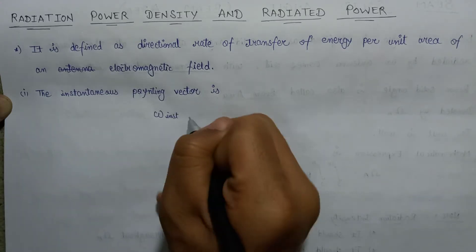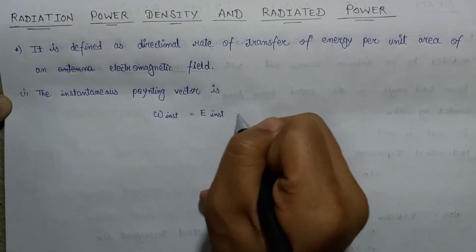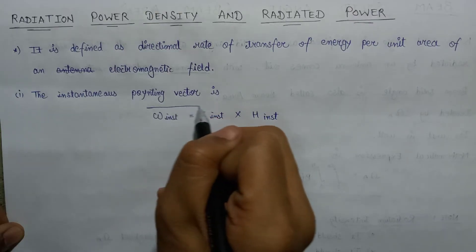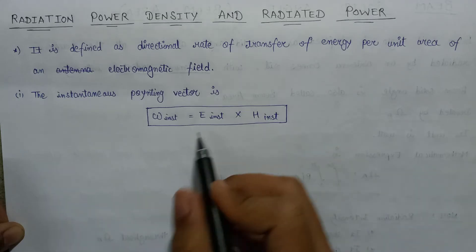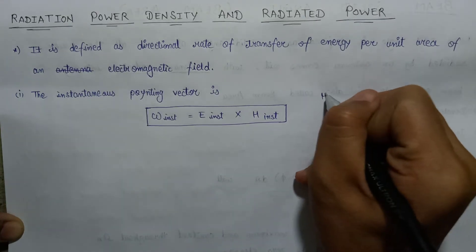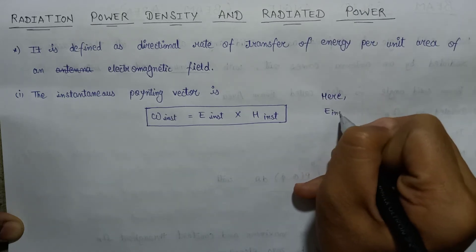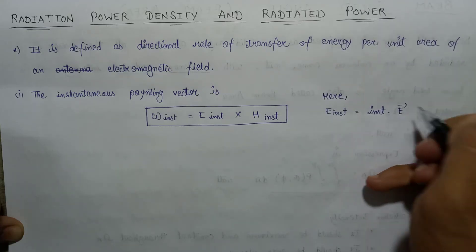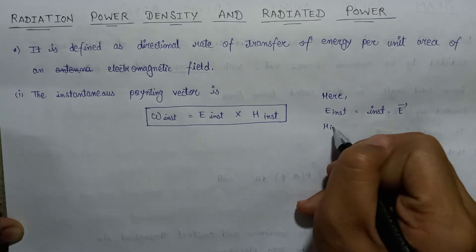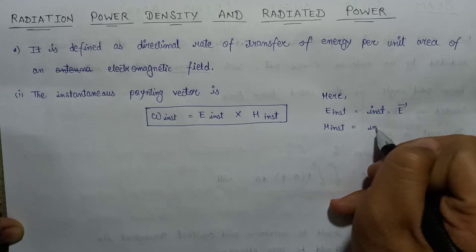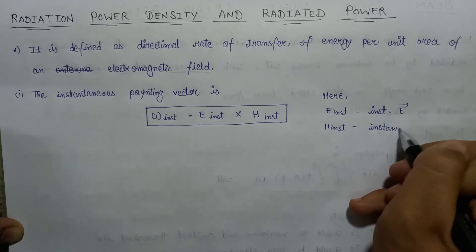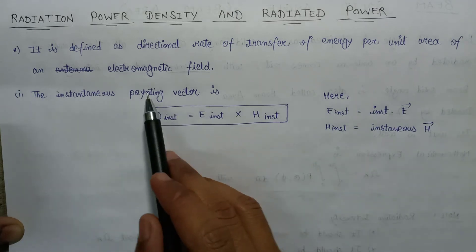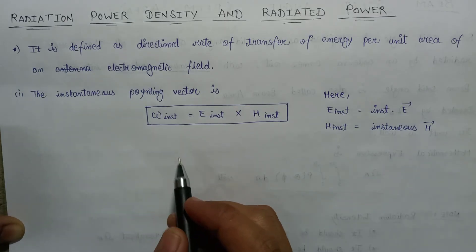W instantaneous equals E instantaneous multiplied by H instantaneous. This is the instantaneous power vector. Here, E instantaneous is known as the instantaneous electric field intensity, and H instantaneous is nothing but the instantaneous magnetic field intensity. W instantaneous is nothing but the instantaneous Poynting vector.